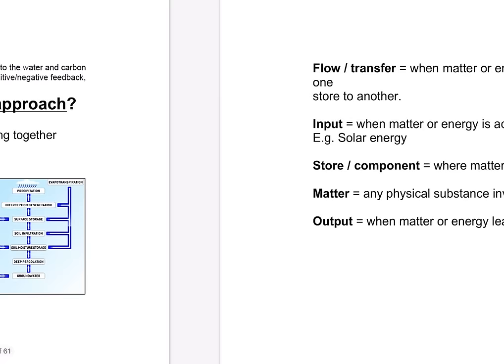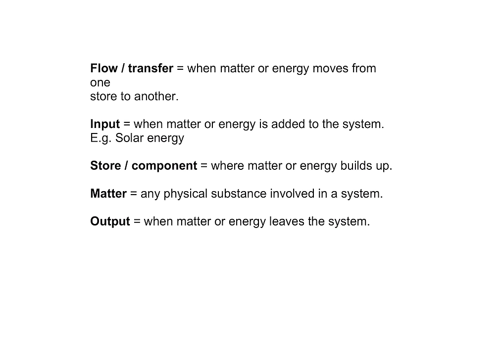To go with that, you've got several key components: flows, inputs, stores, components, matter, and outputs — all the definitions are shown on screen. Using words like these are fundamental to helping explain what's going on in the water and carbon cycle and perhaps linking the two together as well.